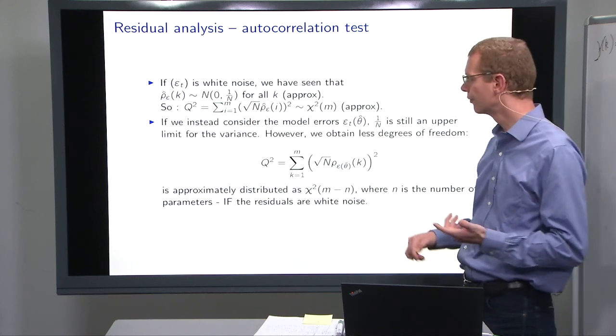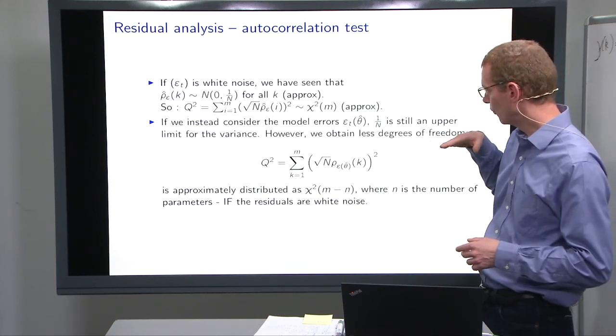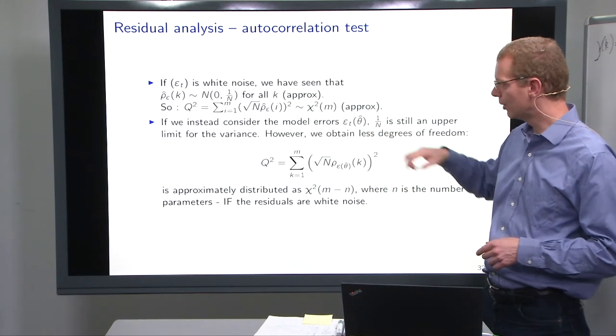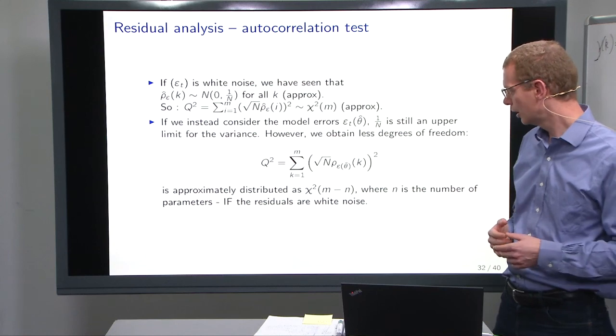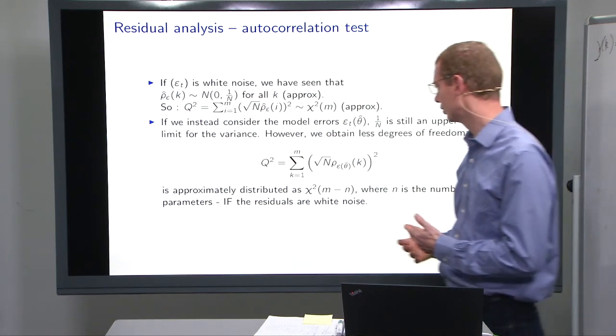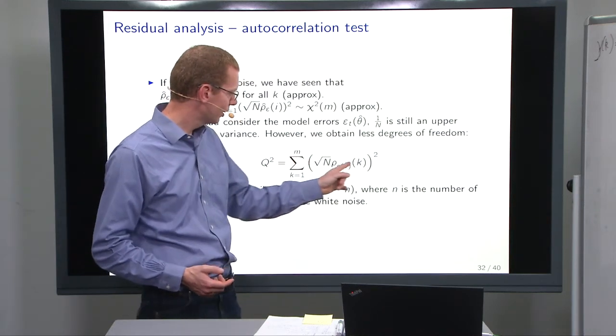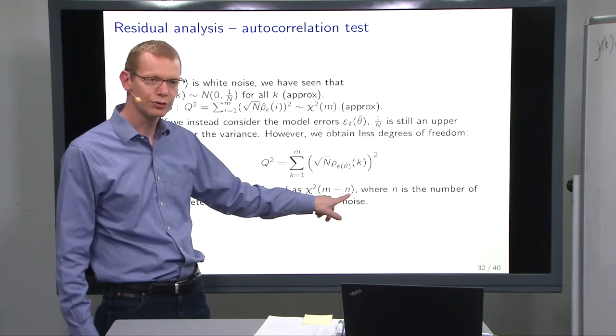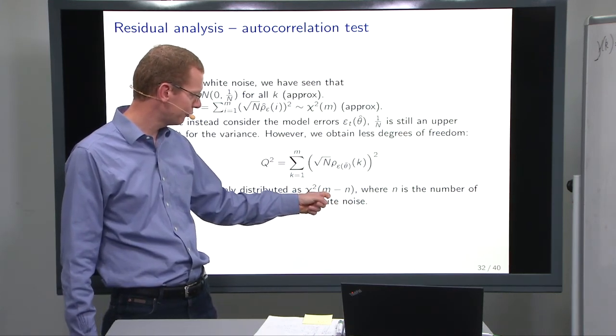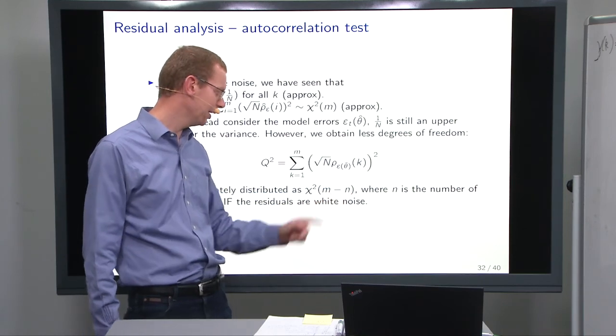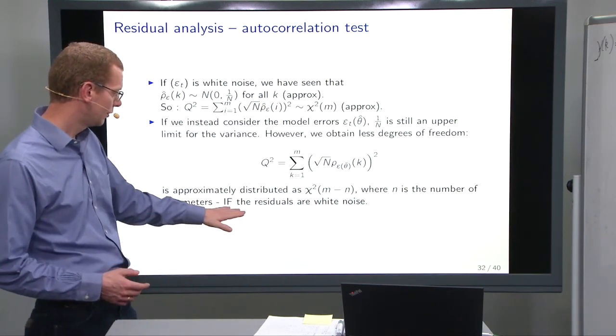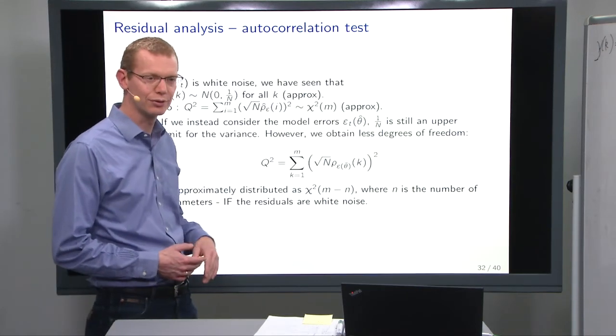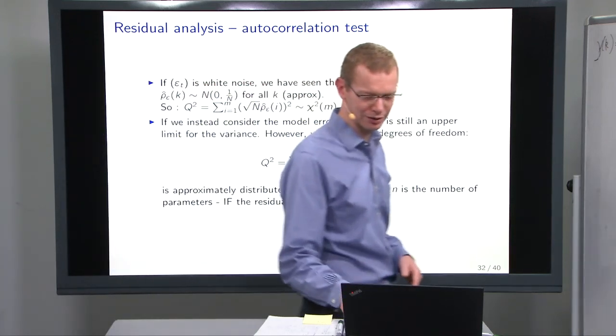When we look at the model errors where we have estimated parameters, then the 1/n is still the limit for the variance. However, the number of degrees of freedom are different, because when we sum these, that's pretty much the same thing we do, but we did estimate n parameters. So we tried to reduce it so it's no longer m degrees of freedom, but it's m minus n degrees of freedom. So that is, if things are white noise, it follows this chi-square distribution, and we can test that as well.